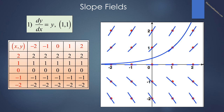Looking at the specific solution going through the point (1, 1), we start at that point. As we go to the right, the slopes get steeper and therefore the curve gets steeper. As we go to the left, the curve gets shallower and gets closer to a horizontal line.